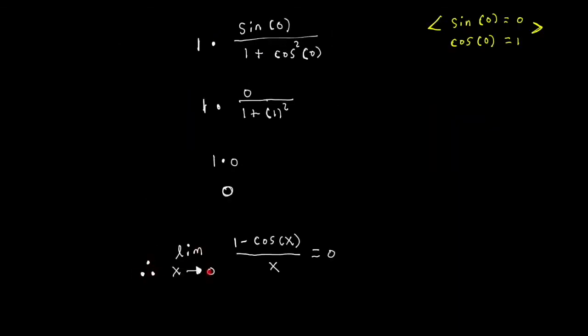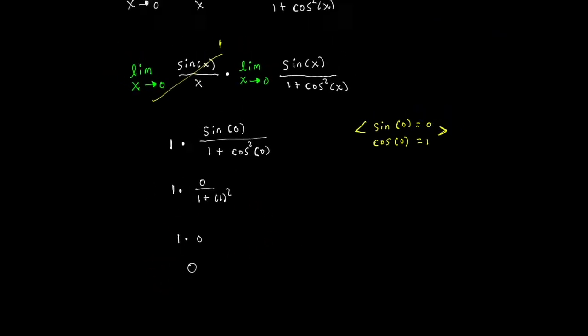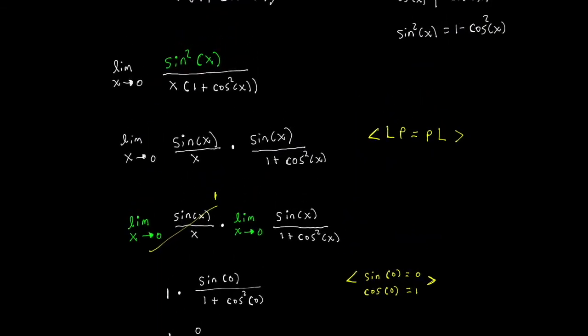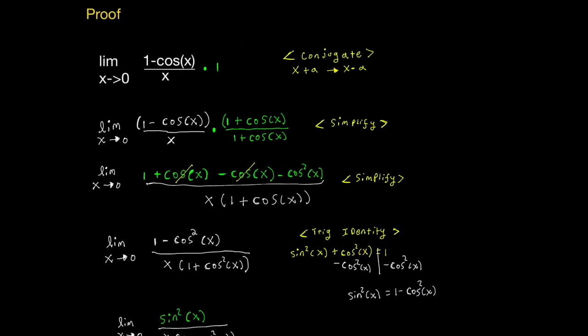Therefore, the limit as x approaches 0 of 1 minus cosine of x all over x is equal to 0. And that is what we wanted to show. So thank you for watching. I hope you review this and hopefully you can recreate this on your own. Good luck with your studying and see you next time.